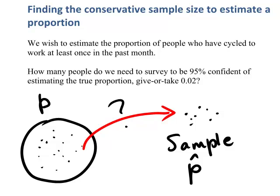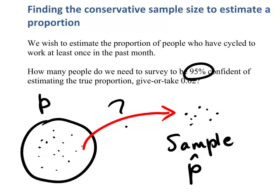In this example, we want to be able to estimate the population proportion to within 0.02. That is, we want to be fairly sure that the true value of the population proportion is within the interval of the sample proportion give or take 0.02. And we would like to be 95% sure that this interval is likely to contain this proportion.